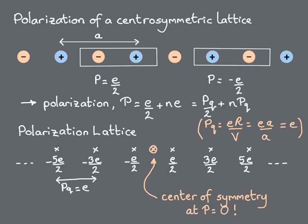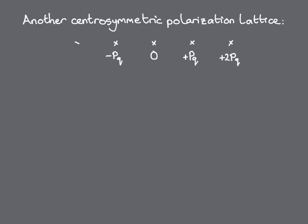Notably, the polarization lattice in this particular case does not contain zero as a value, even though the system is nonpolar. Now there is one other possibility for constructing a centrosymmetric lattice of equally spaced values, which is to center it around zero.